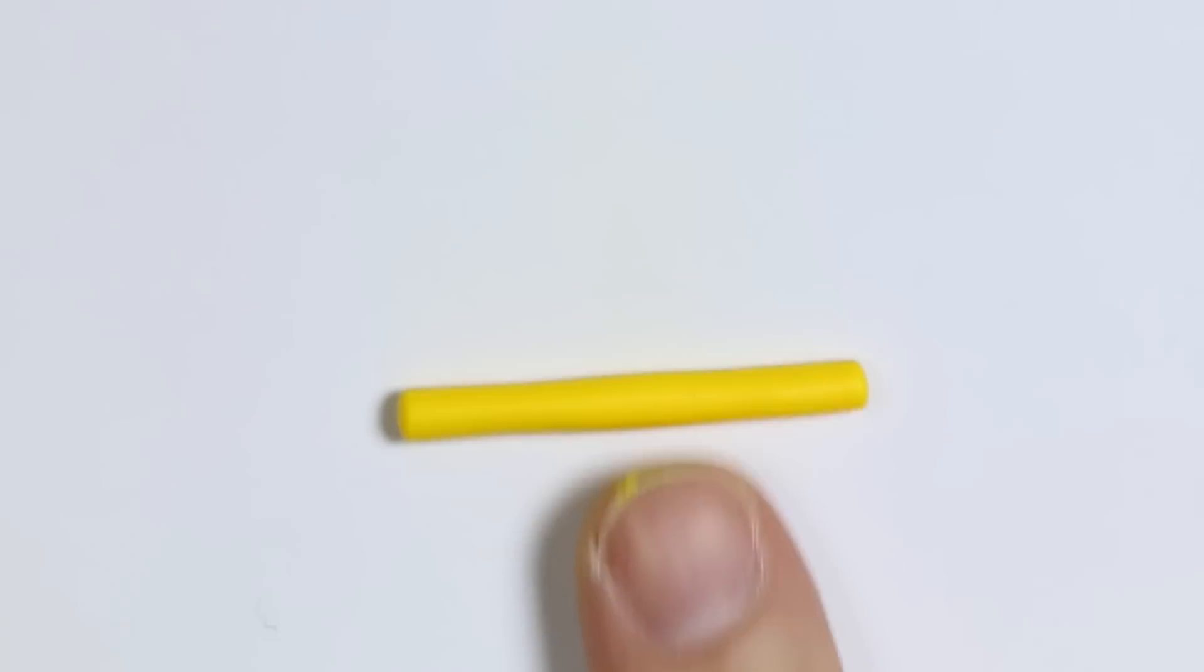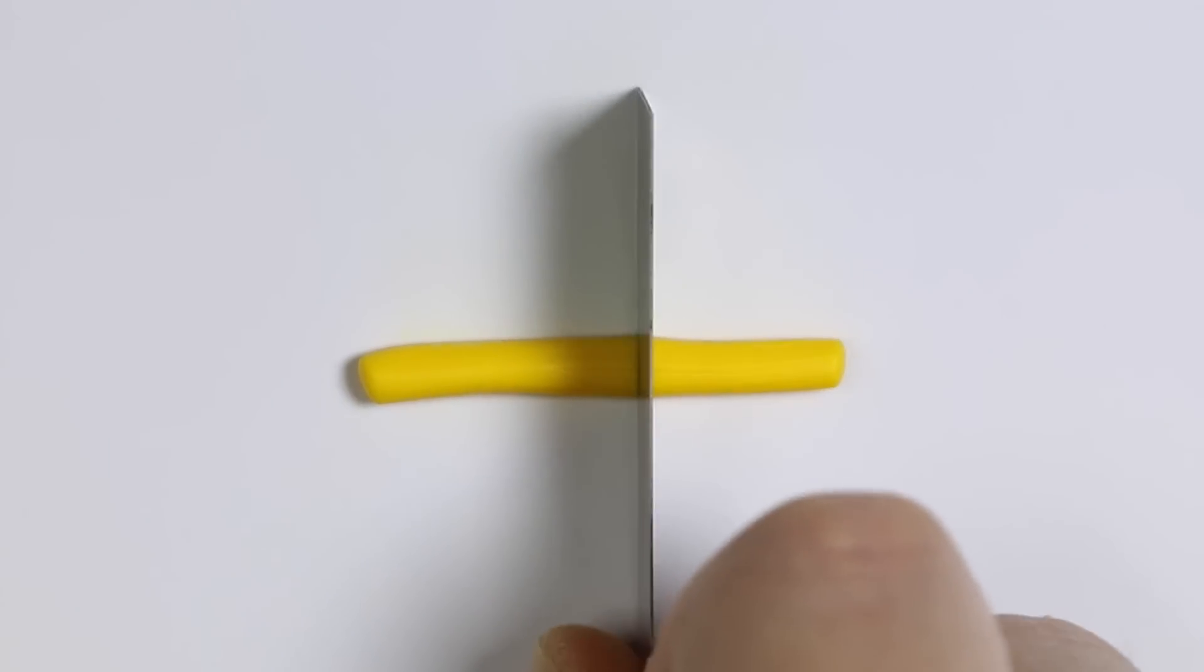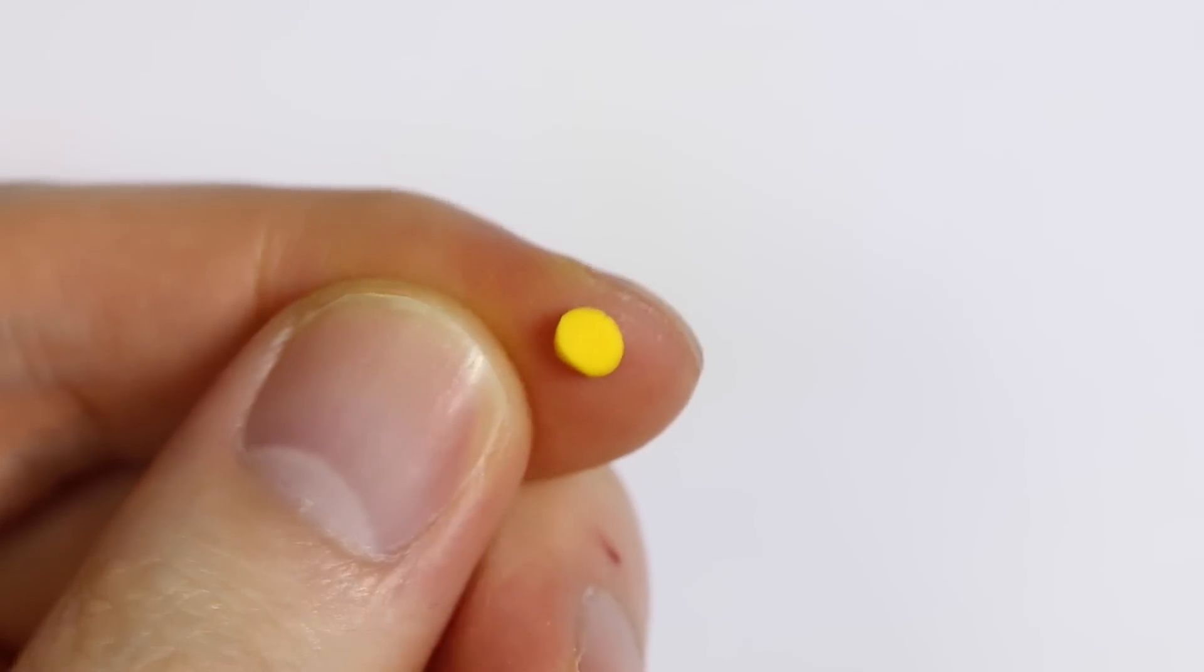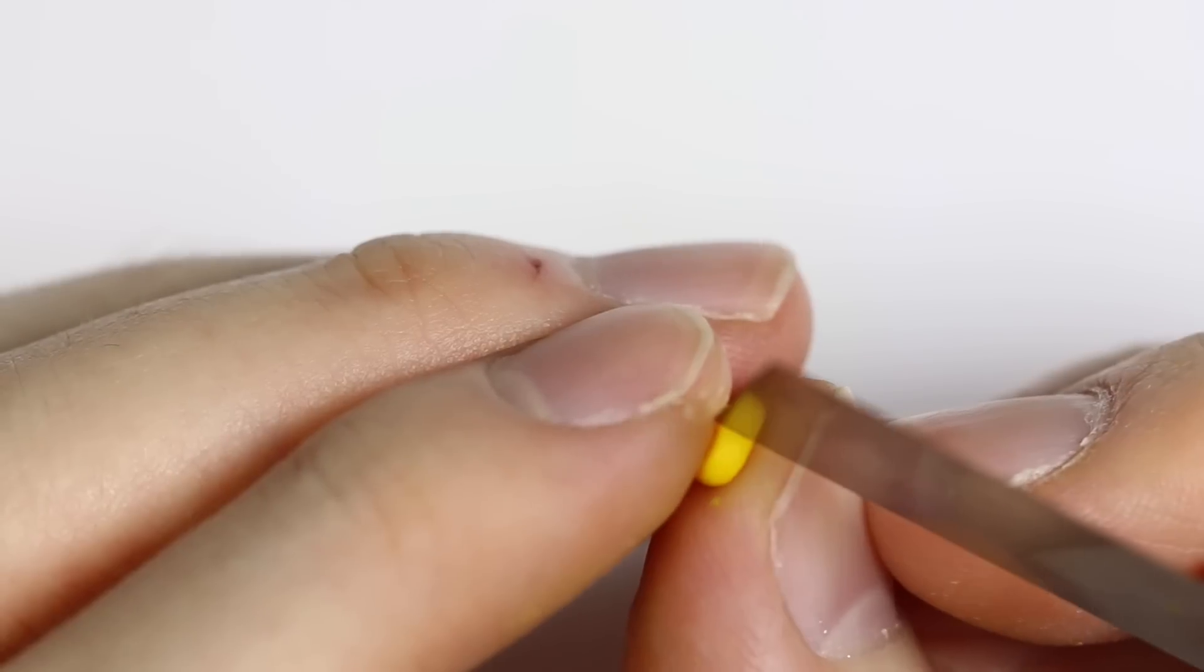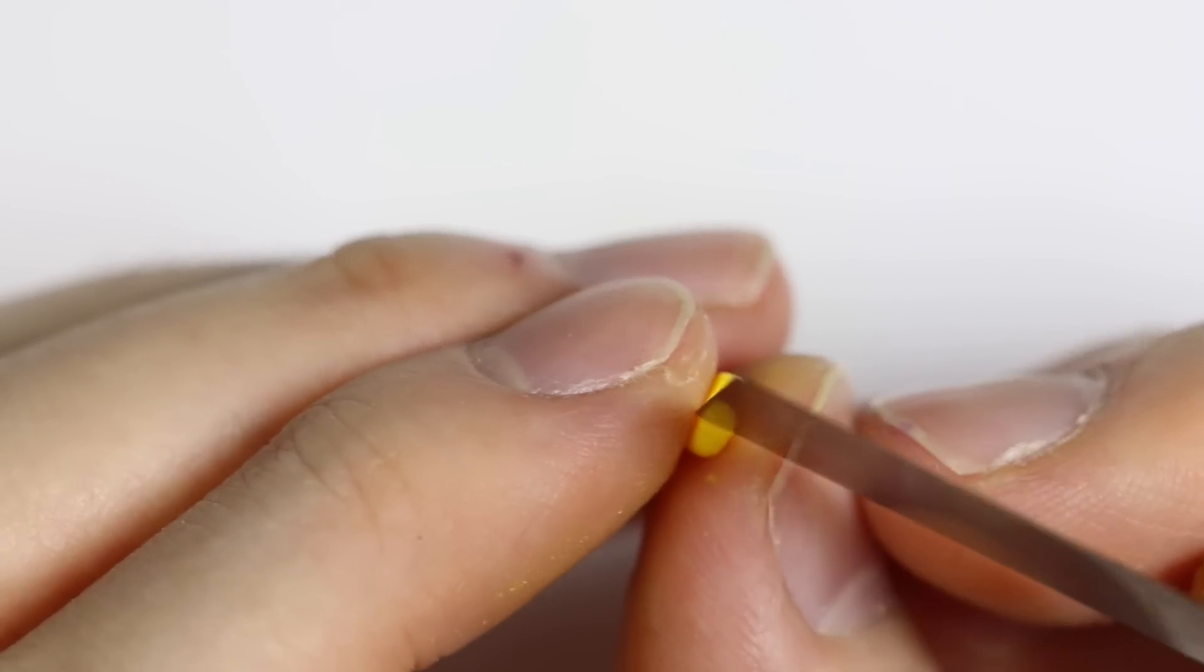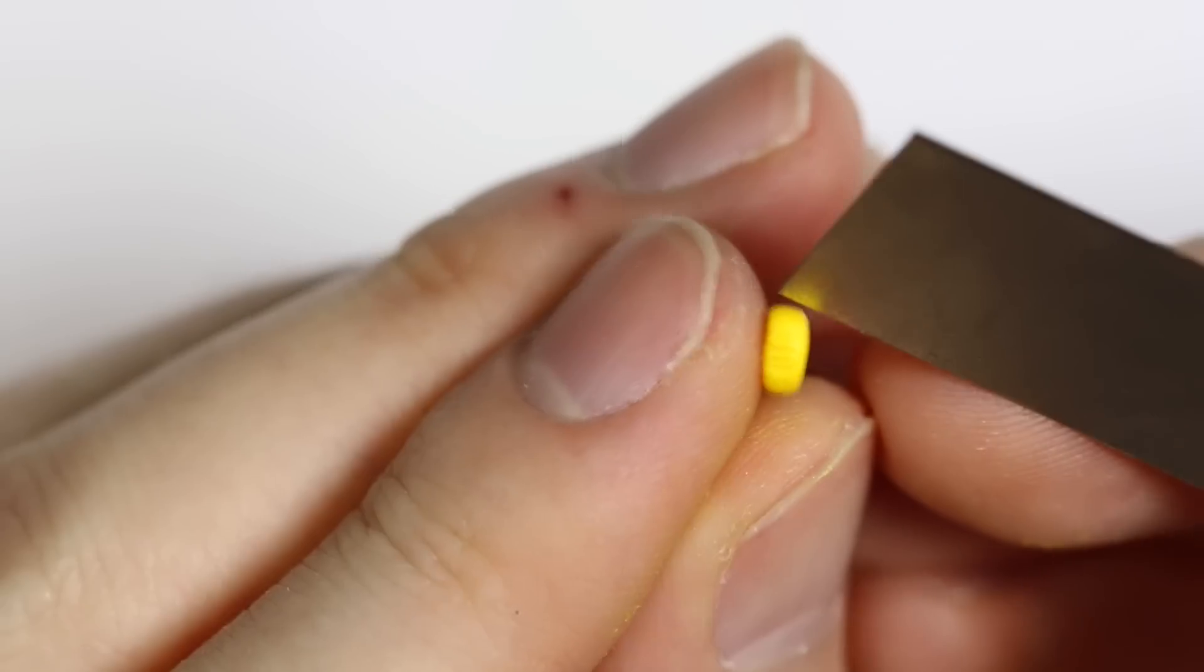So for the lid, we're going to roll out some yellow clay and I'm going to cut out a little disc. And using my blade, I'm going to give it a little indent all around to give it that striped shape.